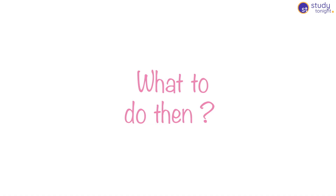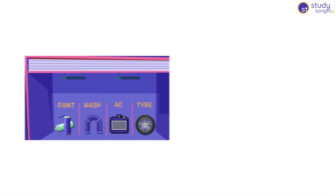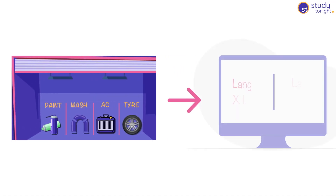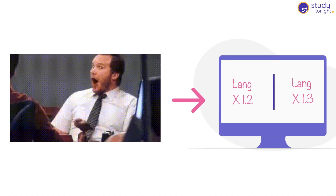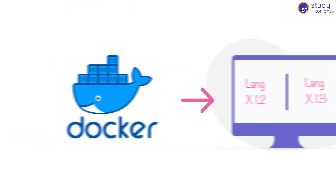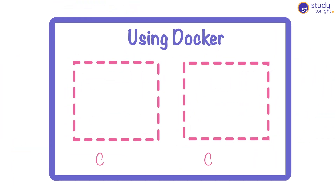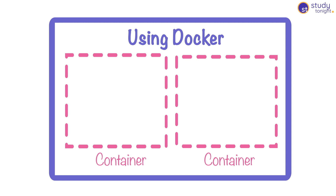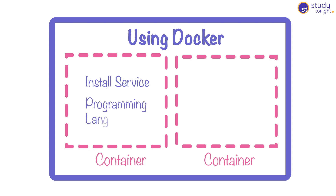But what if, just like the garage, you can create different sections on your local machine too? It is possible with Docker. Using Docker, we can create virtual containers that are completely separated from each other, and inside these containers you can install any service or programming language you want — even a different version of an operating system.